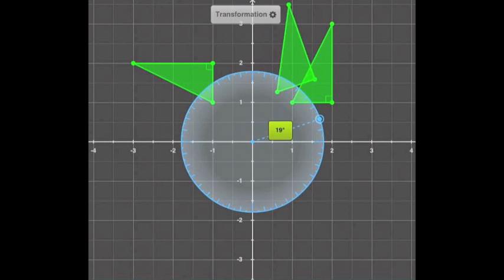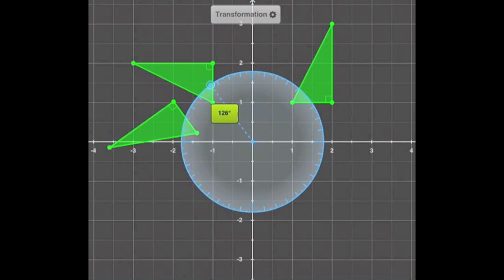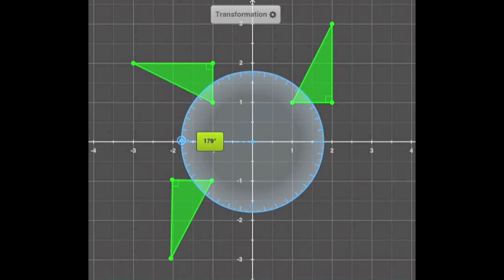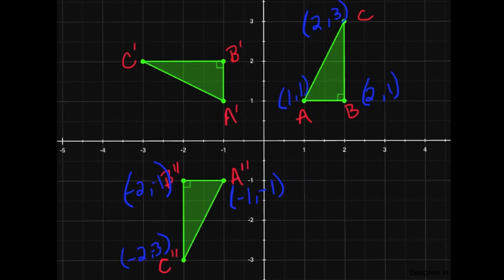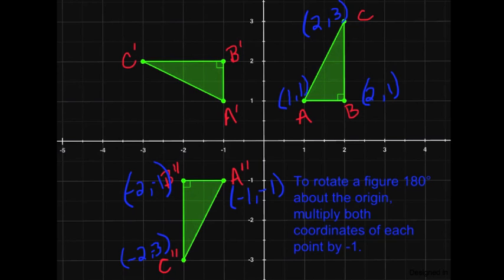We've taken a look at rotating at 90 degrees. Now let's look at rotating at 180 degrees counterclockwise around the origin. Here are the coordinates for each corresponding part: A is (1, 1) and A prime is (-1, 1); B is (2, 1) and B prime is (-2, -1); C is (2, 3) and C double prime is (-2, -3). That's because the rule for rotating a figure 180 degrees around the origin is to multiply both coordinates by negative 1.